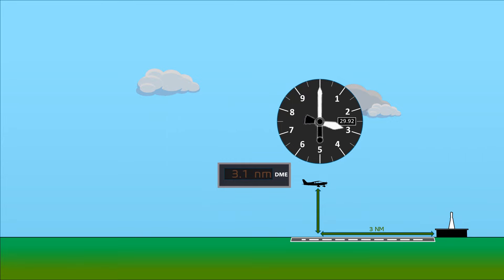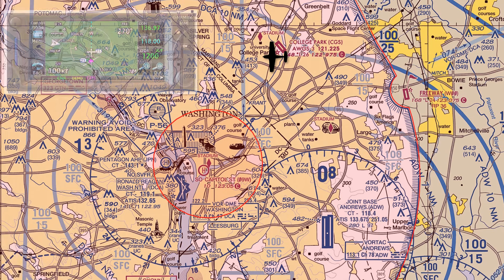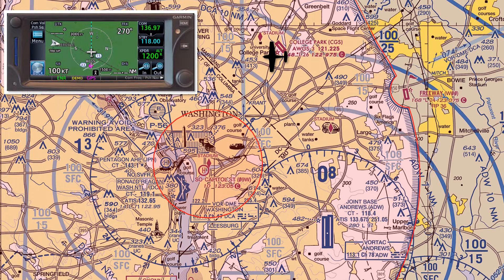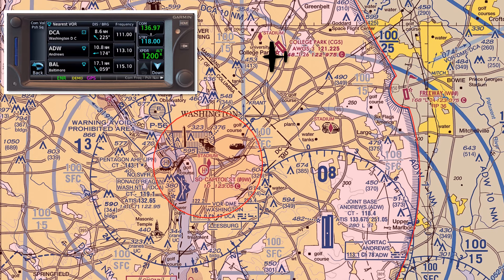IFR capable GPS units can be substituted for DME. Here, we're flying over College Park Airport and we can use our Garmin 650 to determine our distance from nearby VORs. If we select nearest and VOR, we can see our distance from the two closest stations, 8 miles from DCA and 11 miles from Andrews.